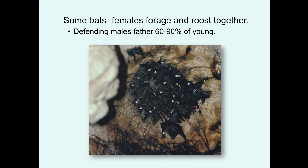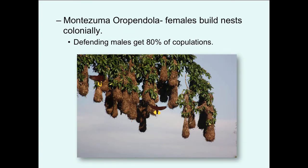Female defense polygyny also exists in some bats, where females gather together to roost and a dominant male can defend this cluster, achieving near-exclusive mating. Defending males in some species may father between 60 and 90 percent of the young. In birds, the Montezuma or pendula — very large tropical orioles — females build large woven nests in colonies, and males defend this preformed cluster, getting about 80 percent of copulations.